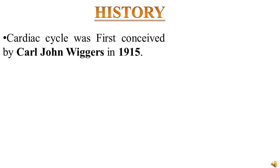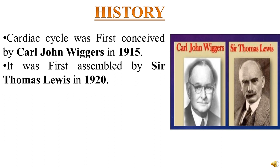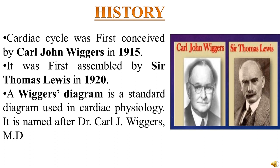Moving on to the history of the cardiac cycle. It was first conceived by a famous scientist named Carl John Wiggers in the year 1915. Then in 1920 it was first assembled by Sir Thomas Lewis — a Wiggers diagram, which is a standard diagram used in cardiac physiology. It depicts the various phases of the cardiac cycle along with the pressure and volume changes, and also the ECG changes. It is named after Dr. Carl John Wiggers who conceived the cardiac cycle.